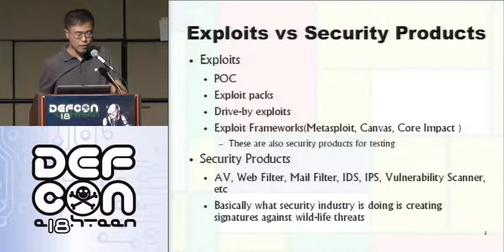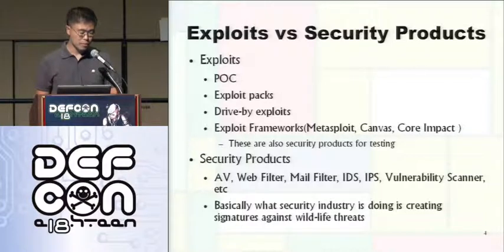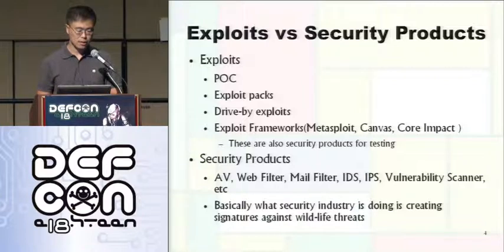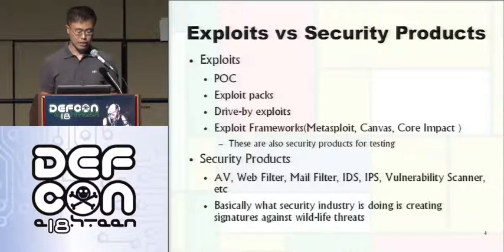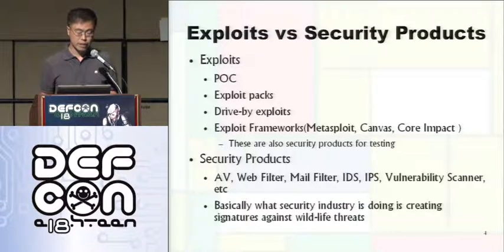Let's talk about exploits and security products. By exploit, I'm talking about POC code, exploit packs, drive-by exploits, and exploit frameworks like Metasploit, Canvas, and Core Impact. Exploit frameworks are also security products for testing. By security product, I mean antivirus, web filter, mail filter, IDS like Snort, IPS, and vulnerability scanners like Retina.